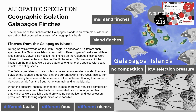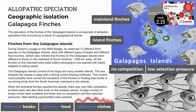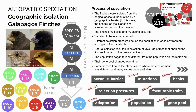Darwin suggested that the different beaks evolved over time in response to different foods available and different niches on the islands, or different roles that the finches could play. We'll explain the process of speciation in the next two slides.